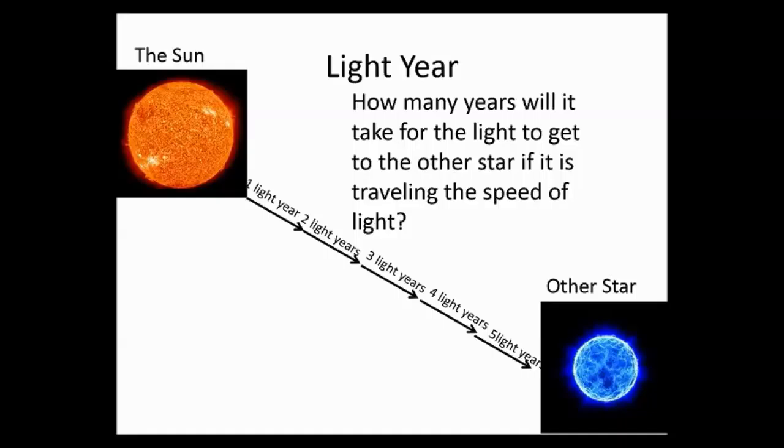Since we know a light year is how far a light can travel in one year, that affects how long it takes the light to get to us, because the stars are so far apart. If the Sun puts off light, that light can travel one year, two years, three years, four years, five years before it made it to this other star. And so that other star is five light years away.